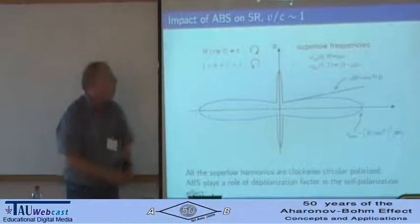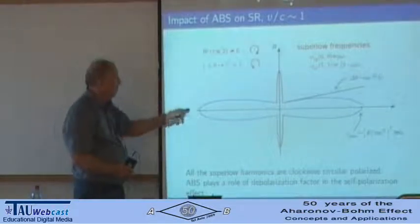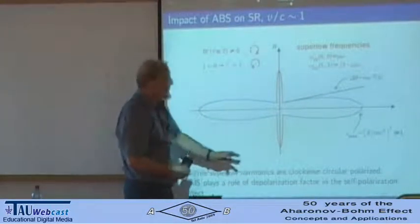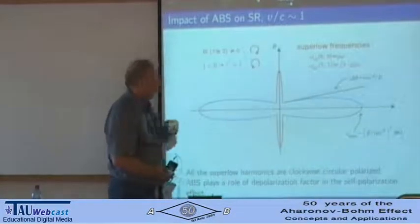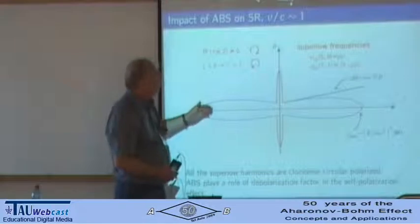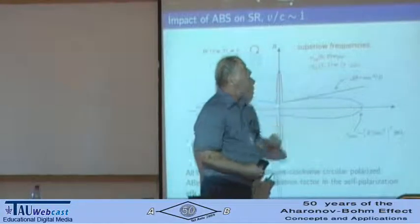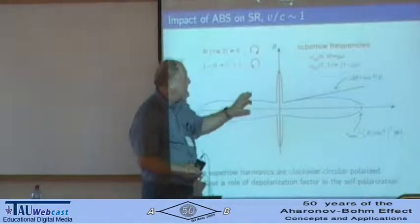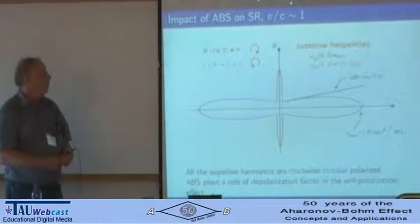In the relativistic case, speaking about synchrotron radiation — by blue we have the usual diagram of synchrotron radiation. In the direction of the magnetic field we have nothing without the Aharonov-Bohm solenoid. But if you add the Aharonov-Bohm solenoid, radiation appears in this direction. Also importantly, super-low frequency harmonics appear with the same values, and the polarization of these harmonics is opposite to other harmonics. This may also open experimental possibilities.